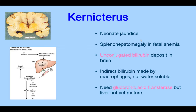Kernicterus is neonatal jaundice with hepatomegaly due to unconjugated bilirubin, which can deposit anywhere in the body but is most dangerous in the brain. Because it's not water-soluble, the liver needs more glucuronosyltransferase. When the buildup is in the brain, it's not soluble or removable, resulting in severe mental retardation or death.